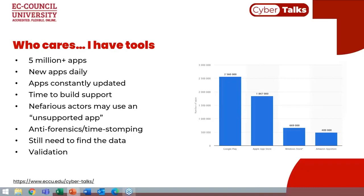Maybe you have every commercial tool on the market and an unlimited budget. But even so, commercial tools might support a thousand mobile applications, while between Google Play and the Apple App Store there are over 4 to 5 million apps. There are new apps constantly and even supported apps are consistently updated. One week I was working on data from Facebook Messenger and the schema changed three times in one week — I was building new parsers three times in one week for the same application.